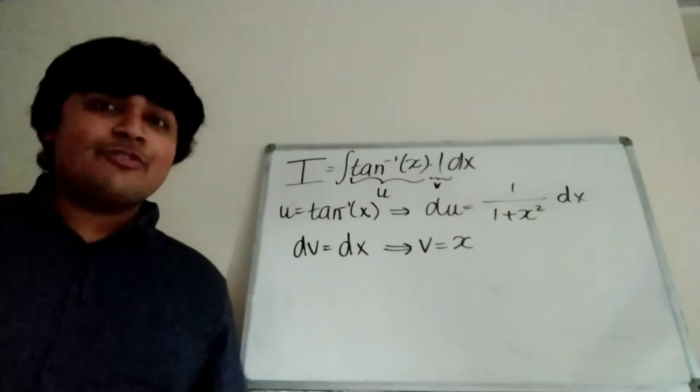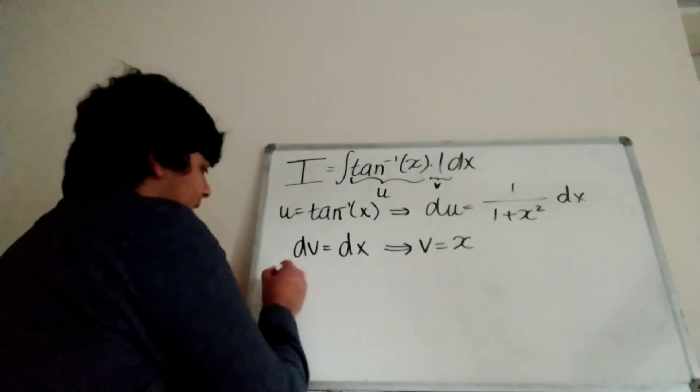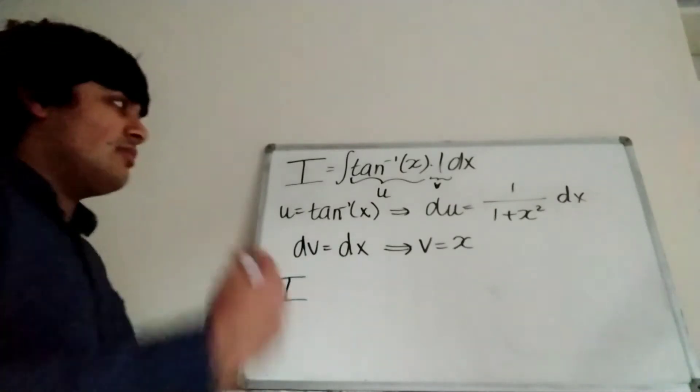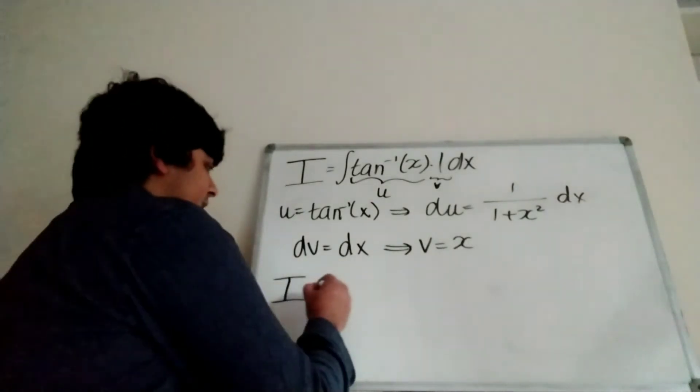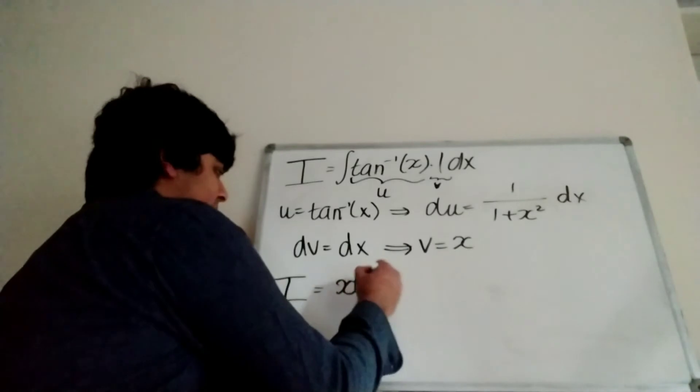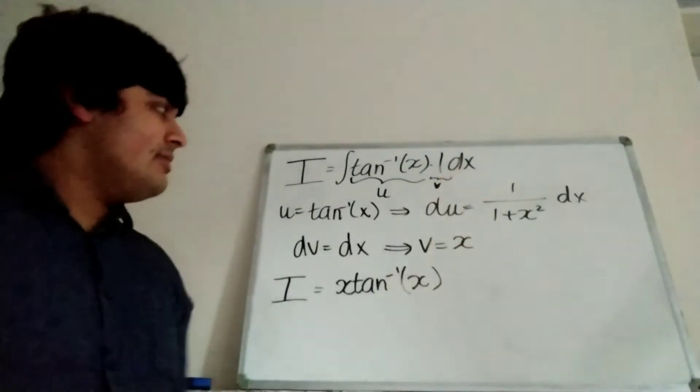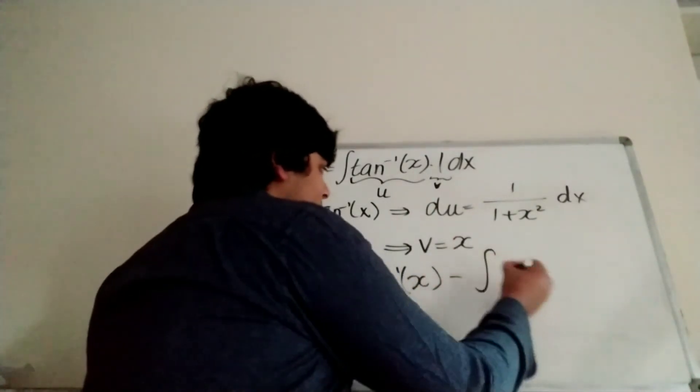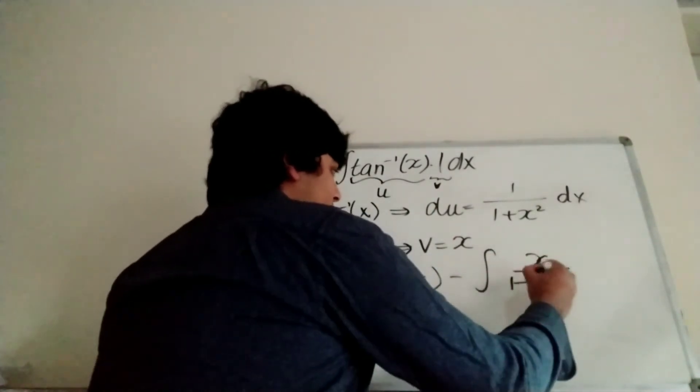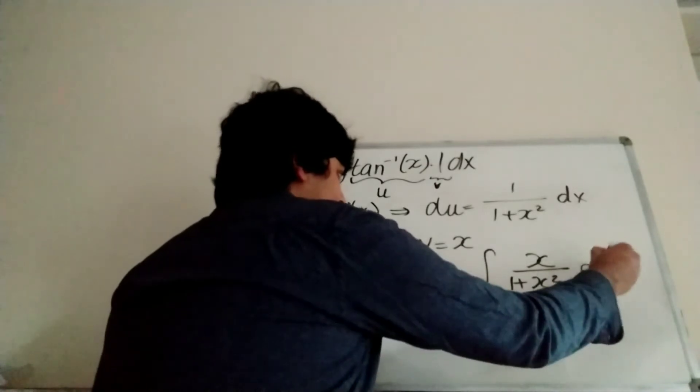And now we can just use our integration by parts formula. So I is equal to uv minus the integral of v du. So I is equal to x inverse tangent of x minus the integral of v du, so minus the integral of x over 1 plus x squared dx.